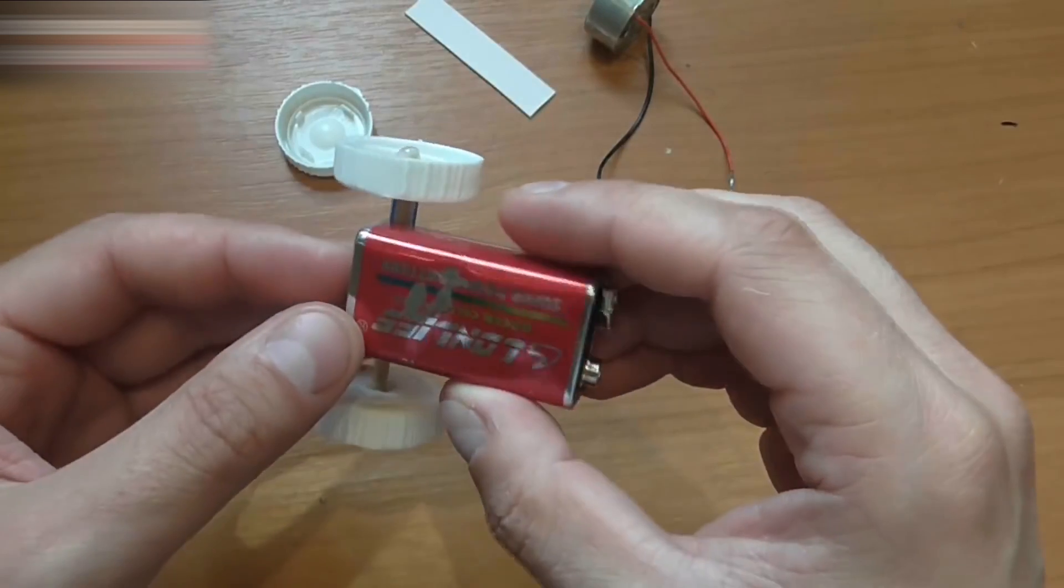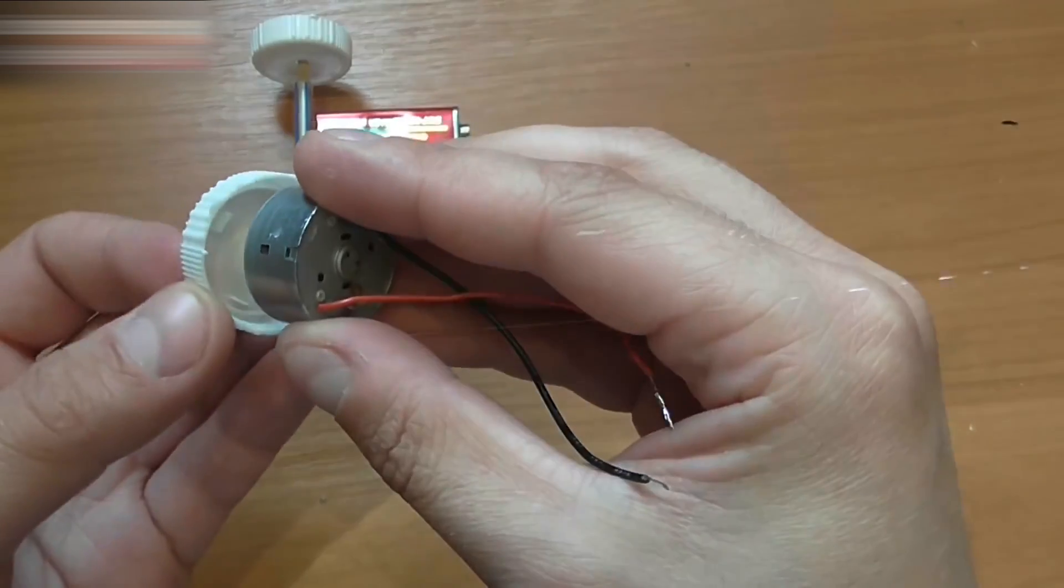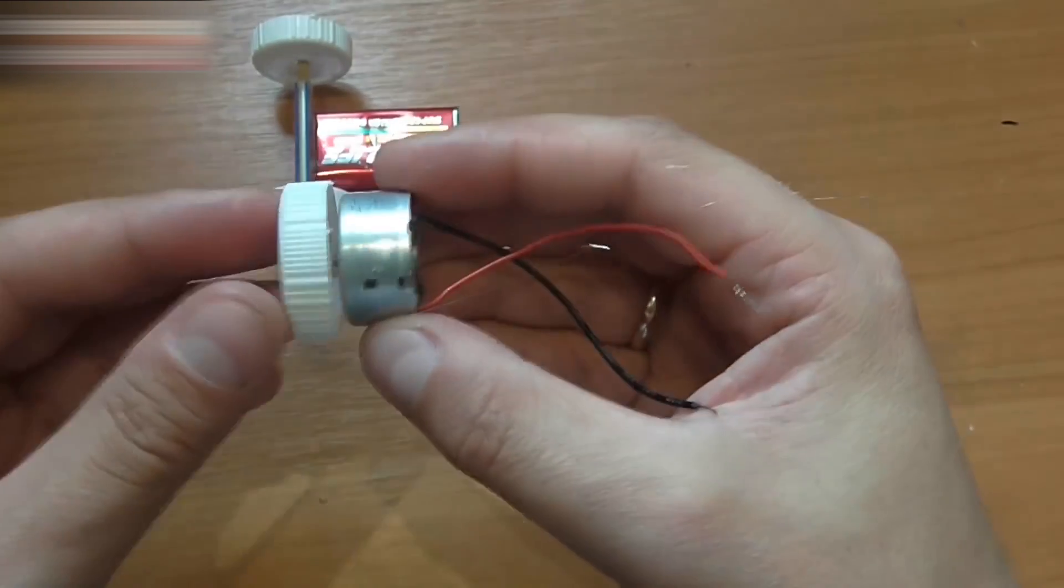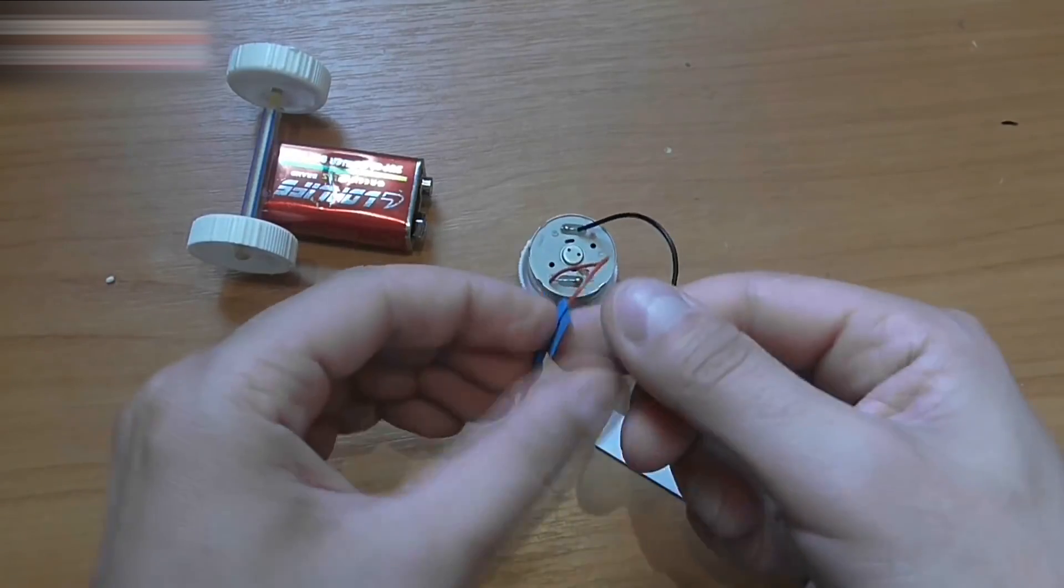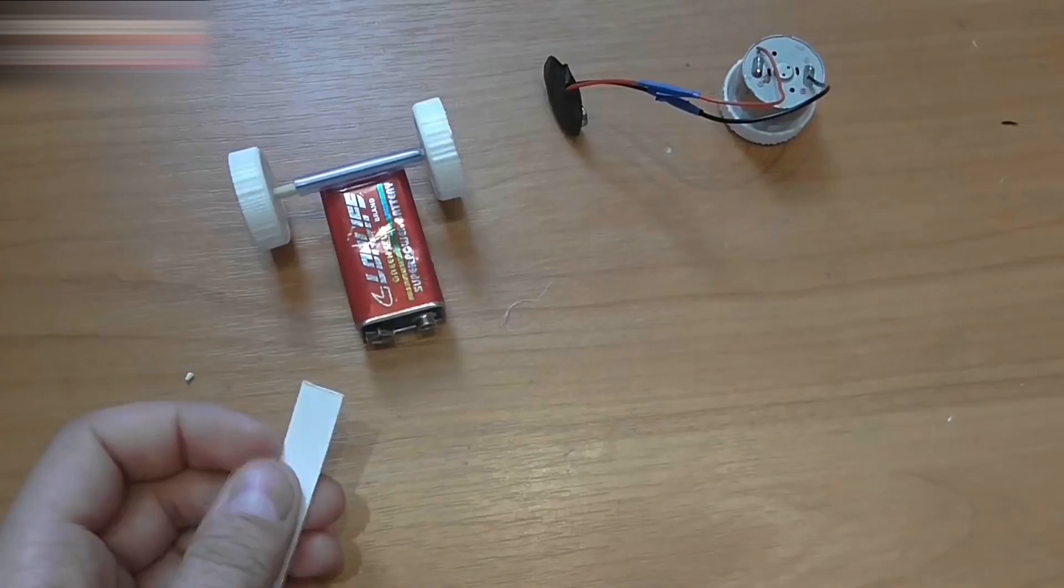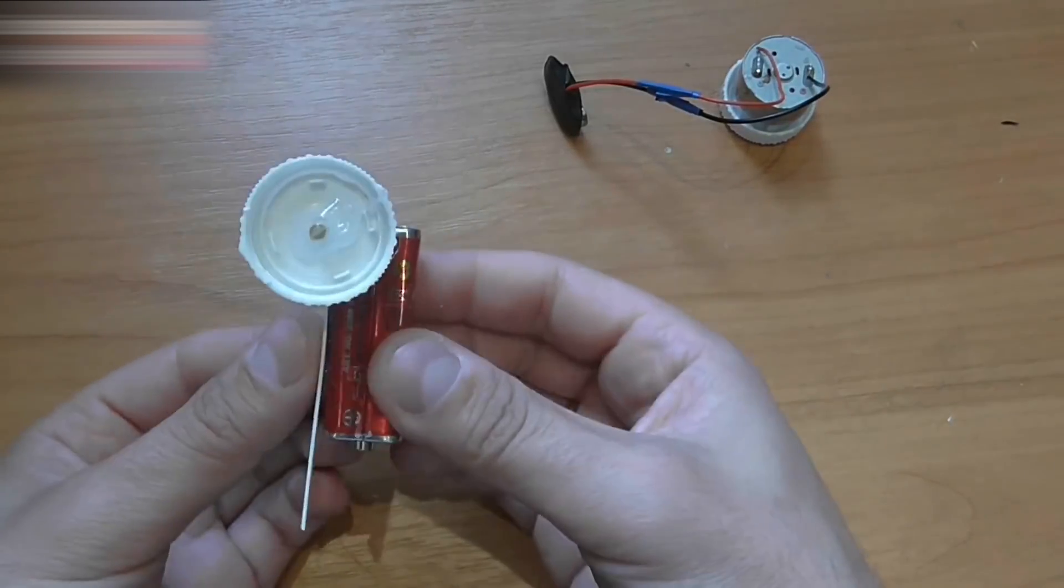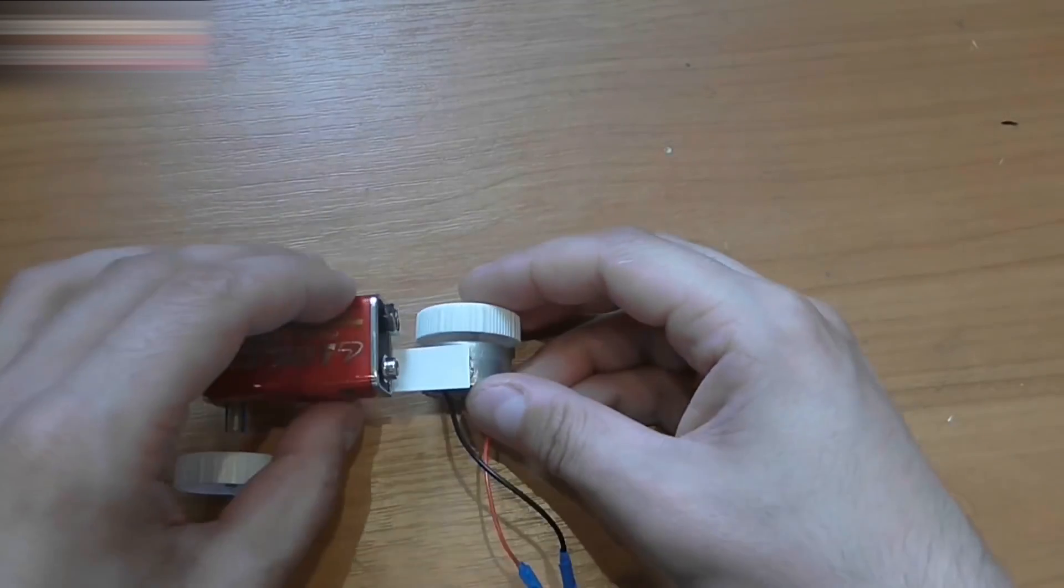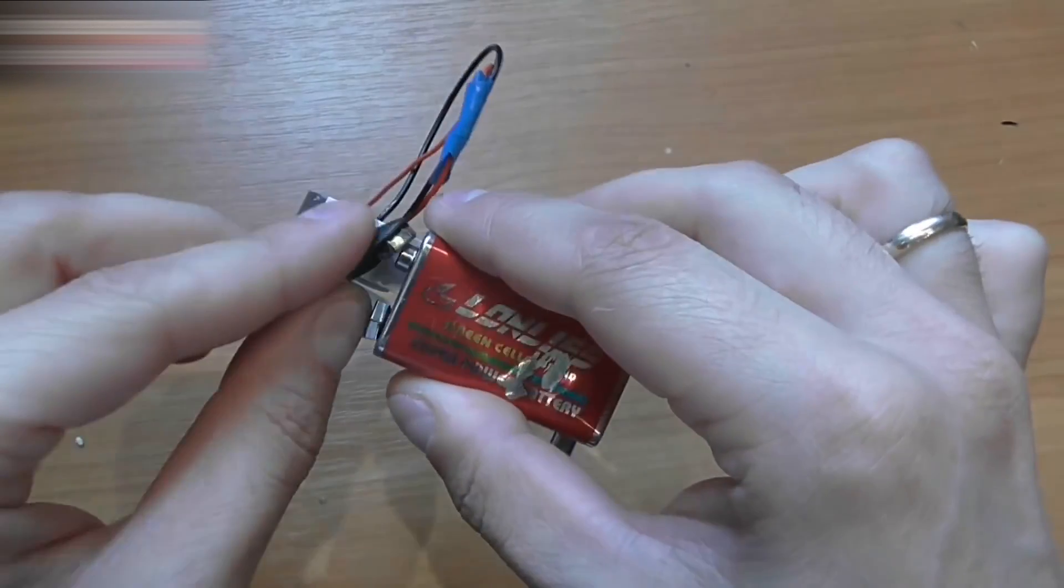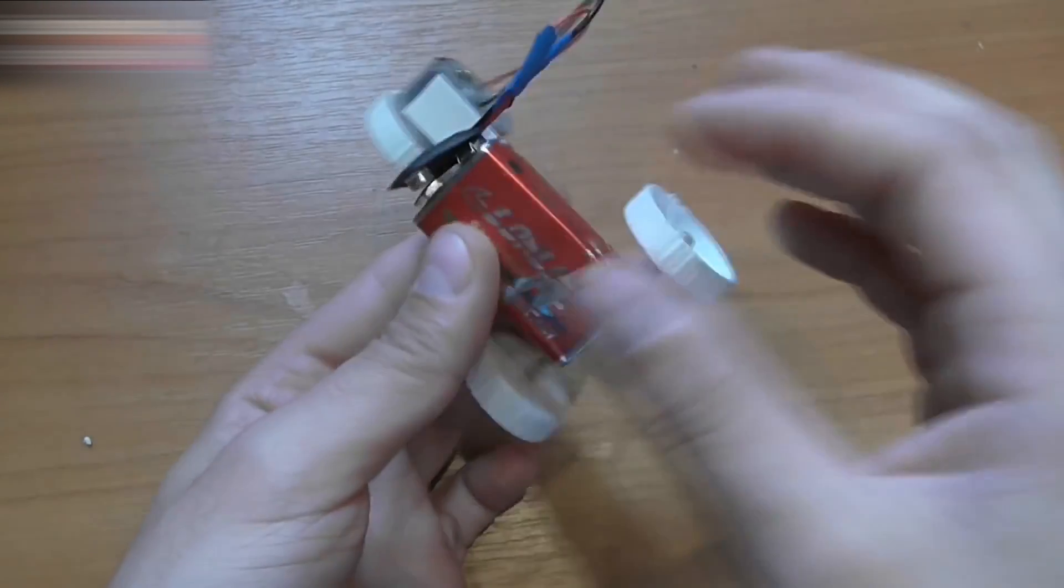Now we attach the motor with the third wheel. Let's see how it's working.